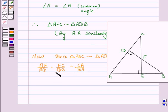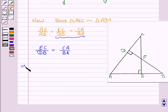Now, considering the last two, we have EC upon DB is equal to CA upon BA or we can say AB. So from this we have BA into EC is equal to CA into DB.